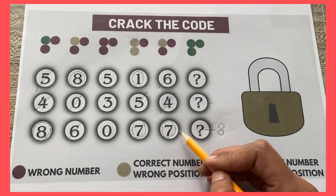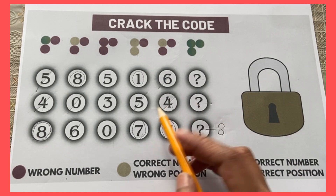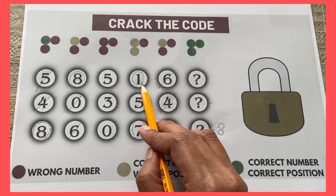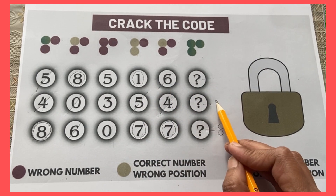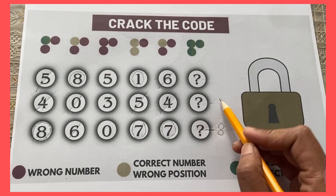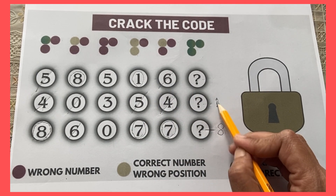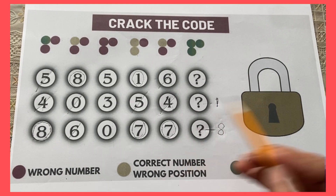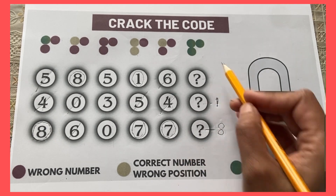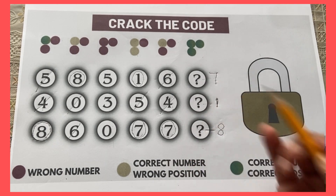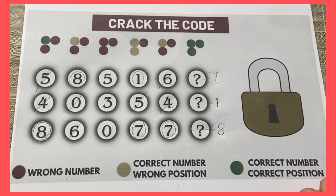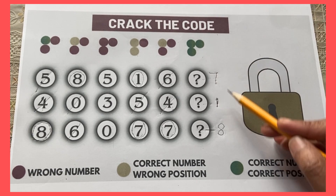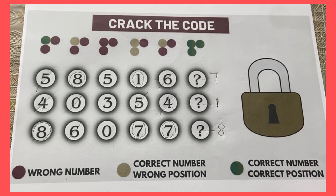Seven and one need to be placed. If one is not here, then it has to go in this position. So let's place one here, and the other correct number, seven, goes in the first position. The three-digit code is seven, one, eight — 718.